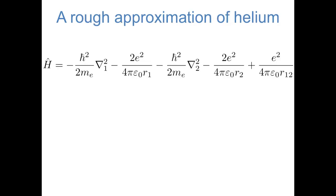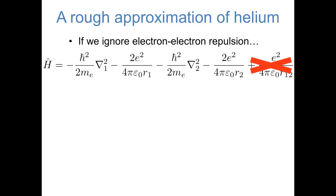Even though we can't solve a multi-electron atom exactly, we'll spend the rest of this video thinking about how we can make reasonable approximations that at least allow us to think about the chemistry of multi-electron atoms. Let's think about a helium atom, which has two electrons. The exact Hamiltonian of helium is shown on this slide. Let's begin by making a very big approximation: that we completely ignore electron-electron repulsion — we just imagine this last term of the Hamiltonian isn't there.